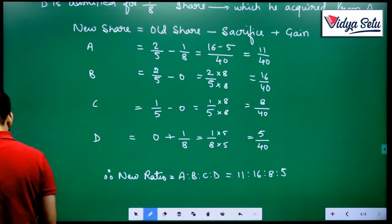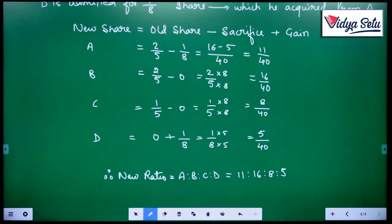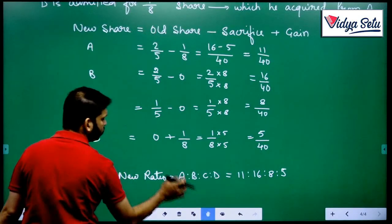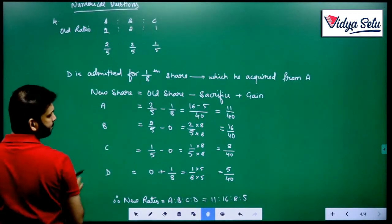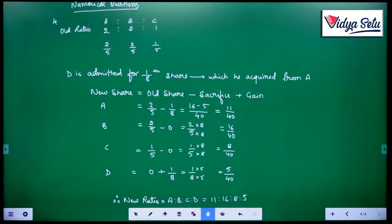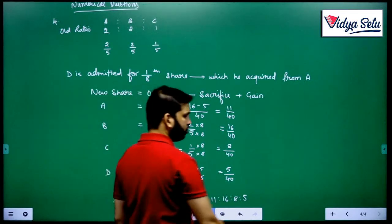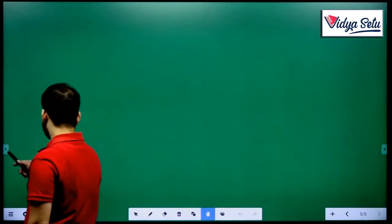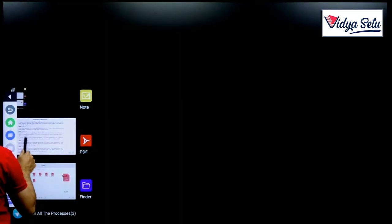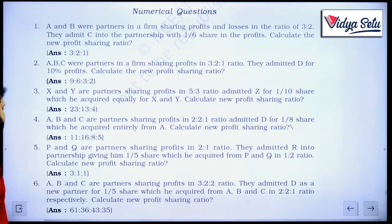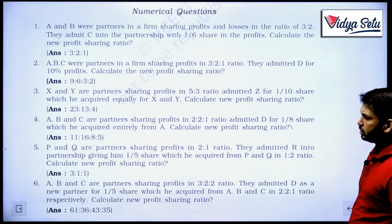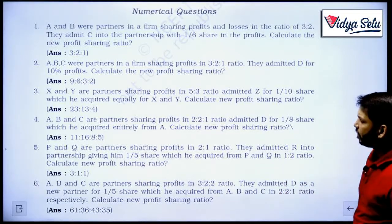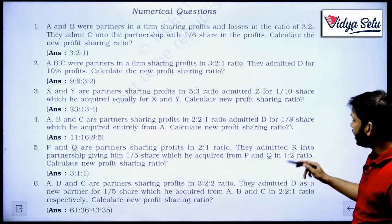They are not divisible, so this is our answer for question number 4. I hope you all have copied this down — this is our answer. Let us do question number 5. P and Q are partners sharing profits in the ratio 2 to 1. They admitted R into partnership giving him 1/5 share which he acquired from P and Q.